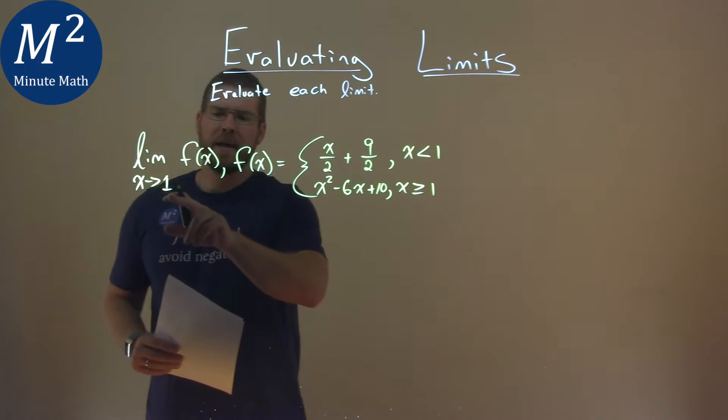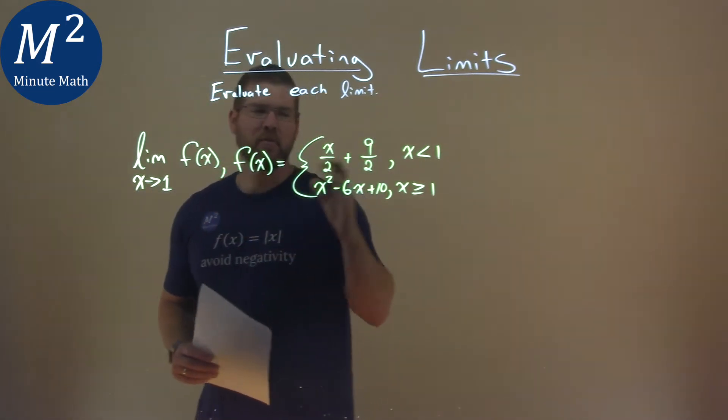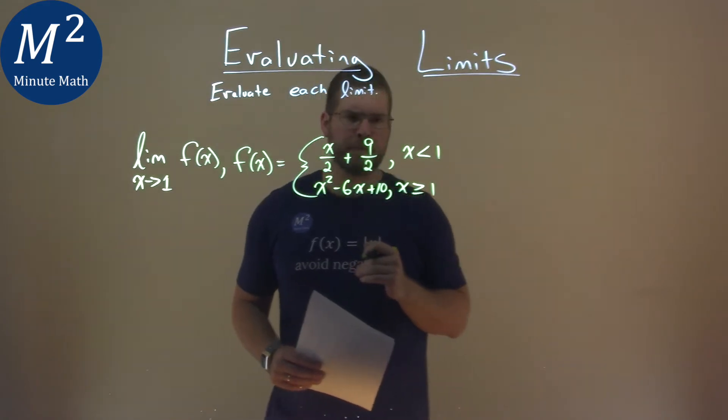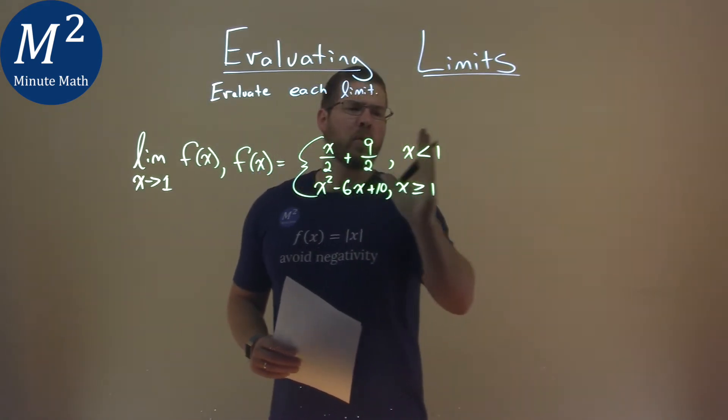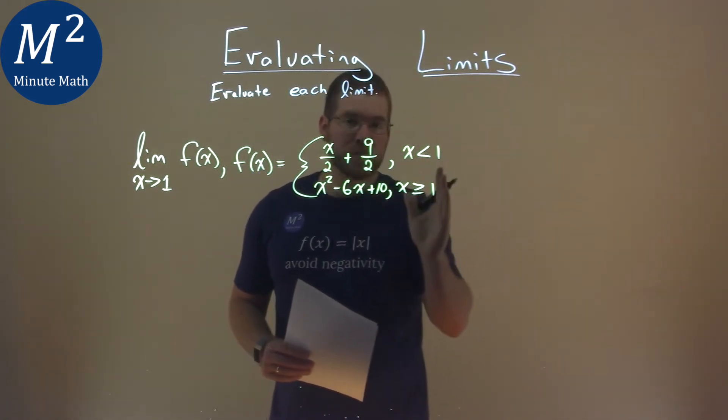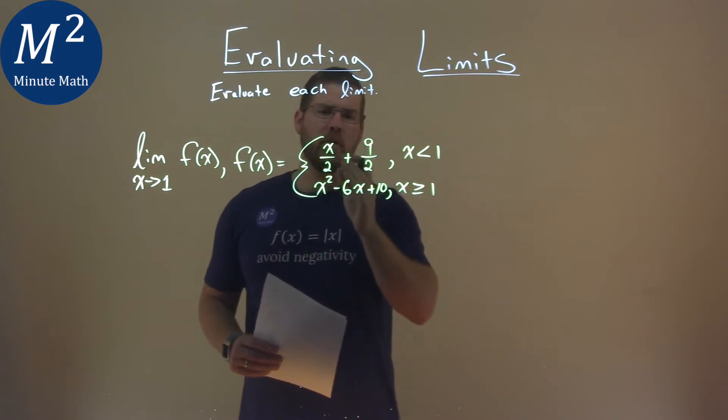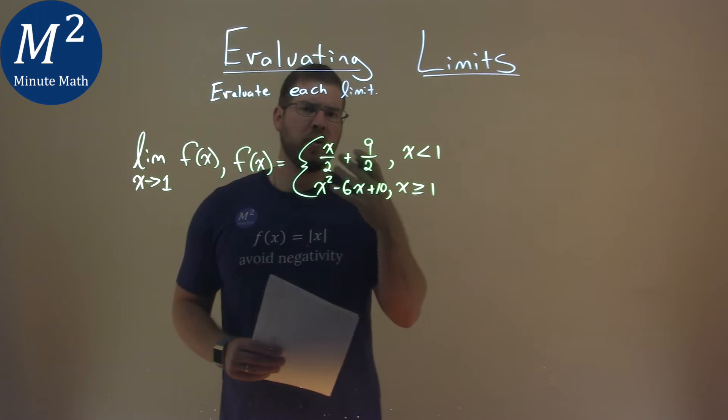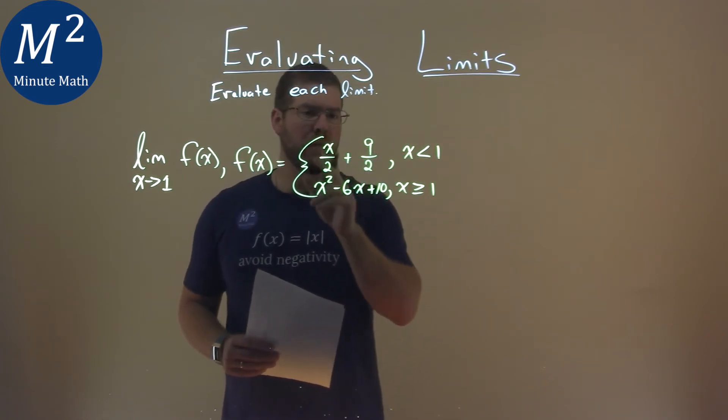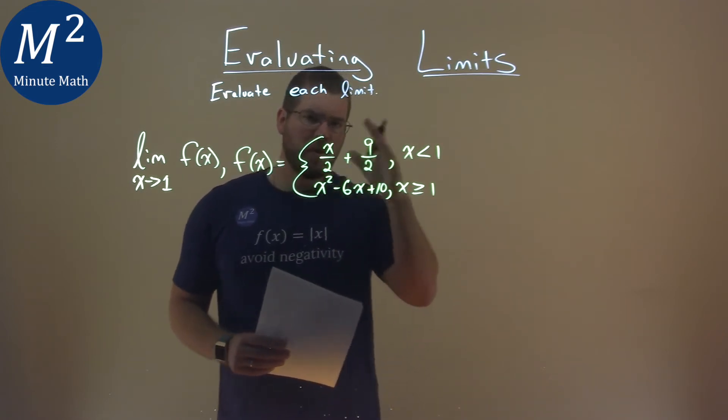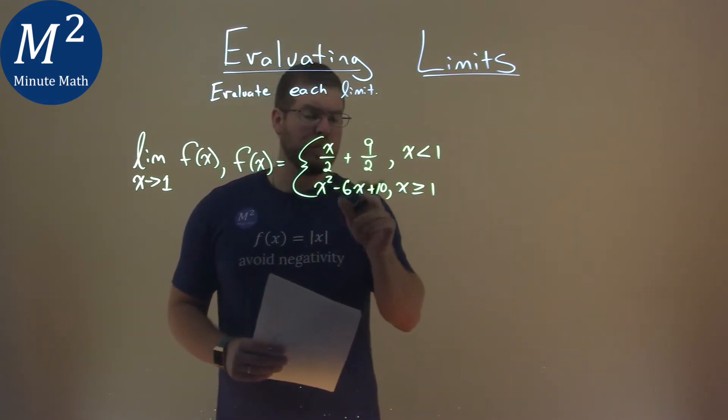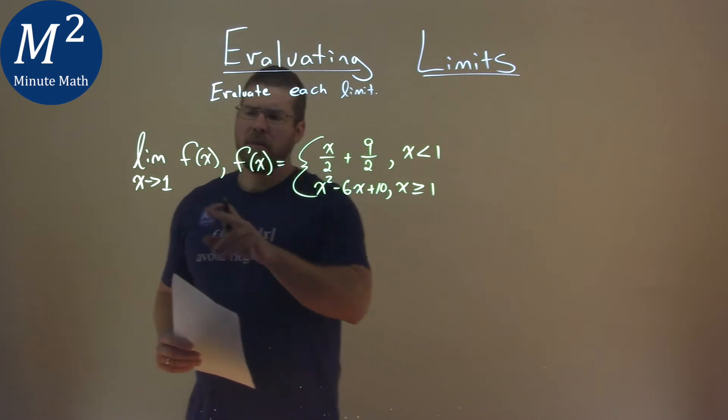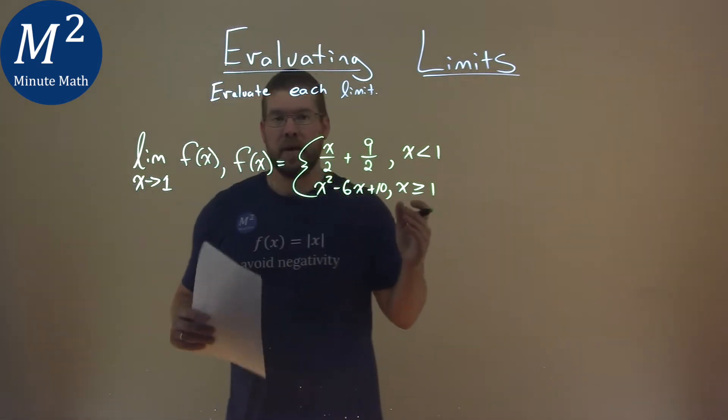Now what's tricky is we can't just plug in x equals 1 right off the bat. We have to analyze our function. If we ignore our restriction on the domain, both of these are continuous functions. We can plug any value in for x that we would like, and we know these functions will be continuous for both of them. So we know we can evaluate 1 from the left and right hand side.